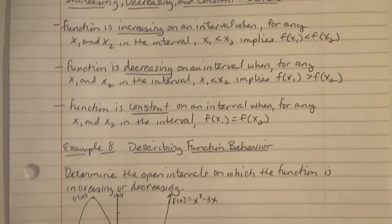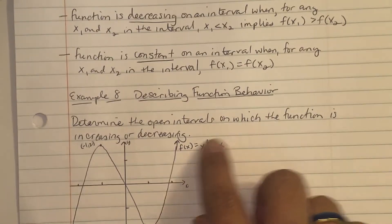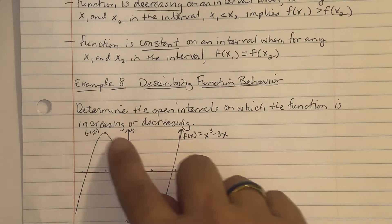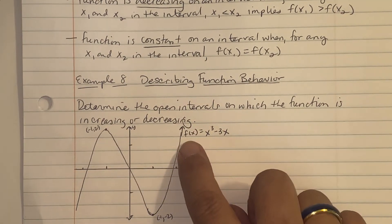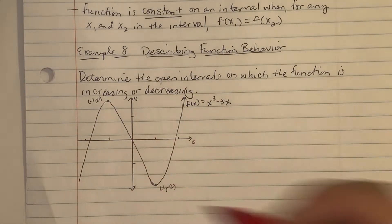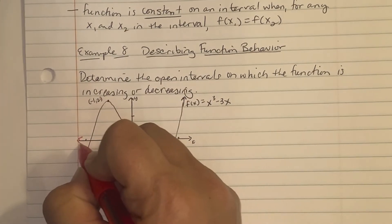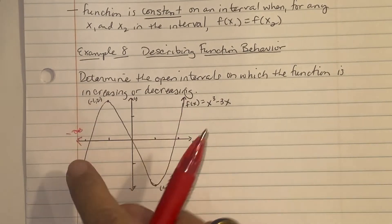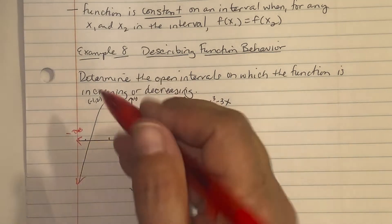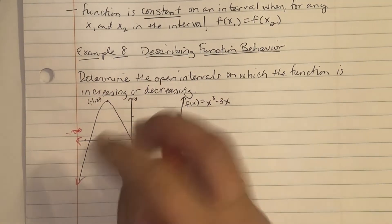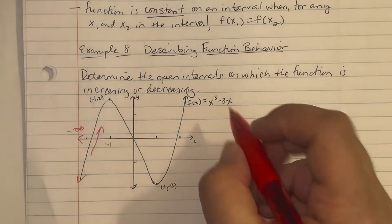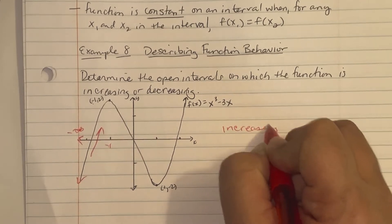In example 8, describing end behavior: determine the open intervals on which the function is increasing or decreasing. They gave us the graph of f(x) = x cubed minus 3x. Looking at the graph, going left toward negative infinity, from negative infinity to the point x equals negative one, the function is increasing.